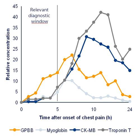Biomarkers used for personalized medicine are typically categorized as either prognostic or predictive. An example is KRAS, an oncogene that encodes a GTPase involved in several signal transduction pathways. Prognostic biomarkers indicate the likelihood of patient outcome regardless of a specific treatment. Predictive biomarkers are used to help optimize ideal treatments and indicate the likelihood of benefiting from a specific therapy.